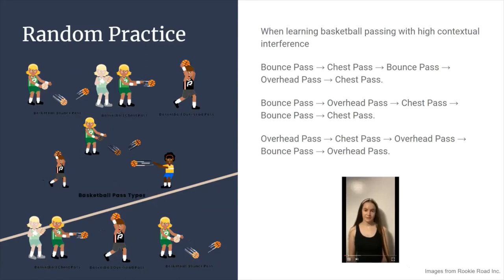Another type of practice is random practice, which has high contextual interference. Unlike block practice, which is structured and rigid, random practice involves switching between trials.